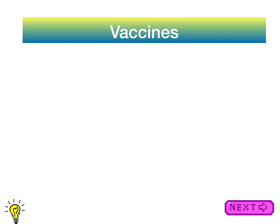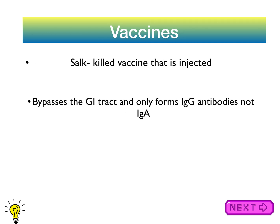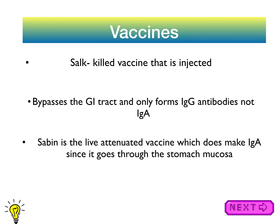Remember that all enteroviruses are capable of causing aseptic meningitis. The vaccines that were a major medical milestone are the Salk vaccine and the Sabin vaccine. The Salk vaccine is a killed, injected vaccine — it bypasses the GI tract and only forms IgG antibodies rather than IgA. The Sabin vaccine is a live attenuated oral vaccine that does produce IgA since it goes through the stomach mucosa. The US typically uses the Salk vaccine because the Sabin vaccine carries a small risk of vaccine-derived polio.